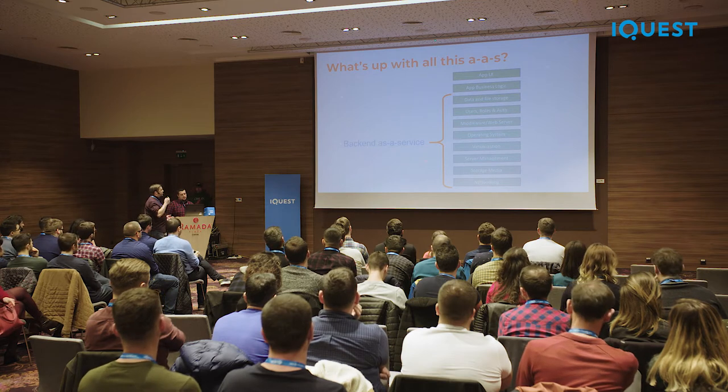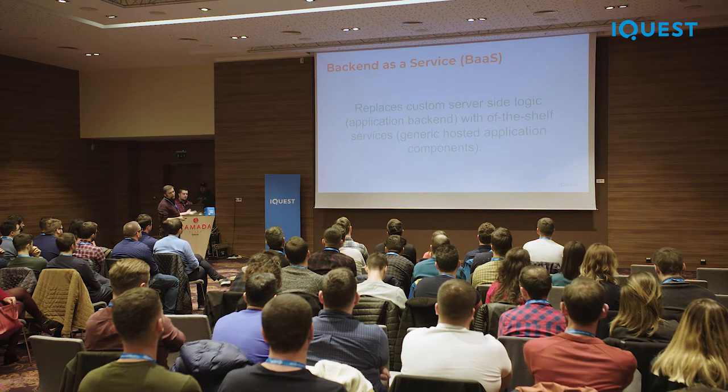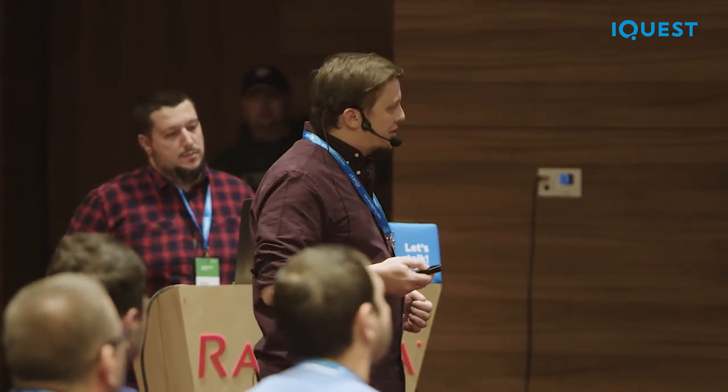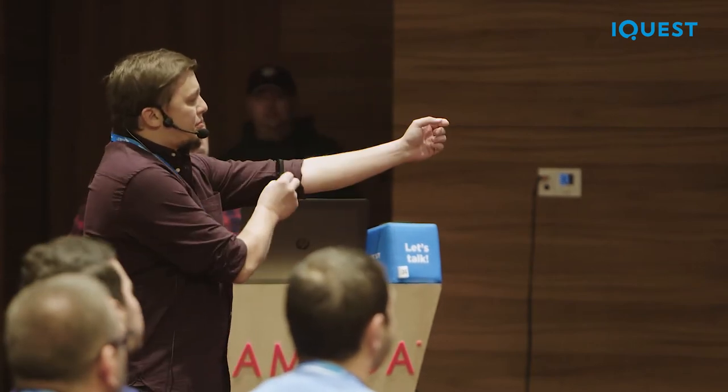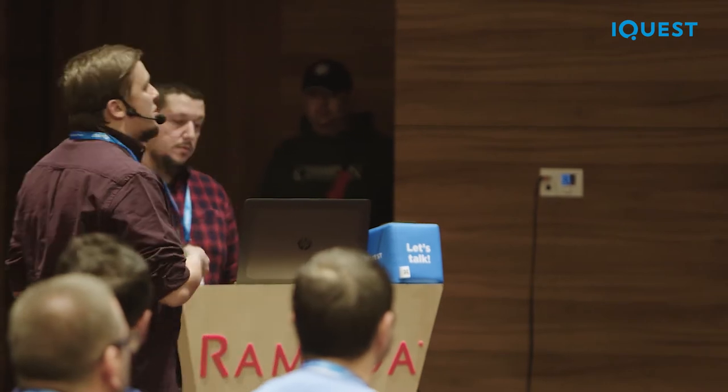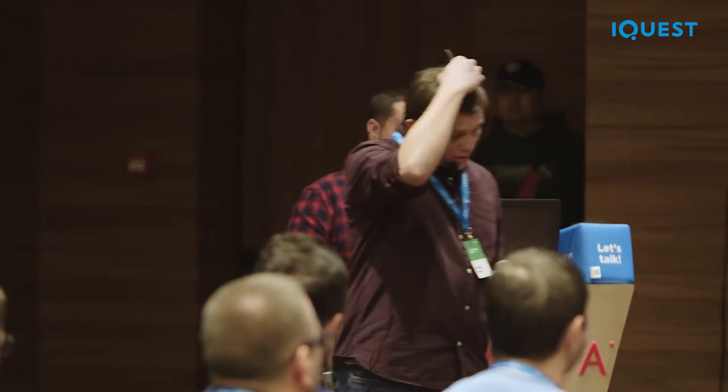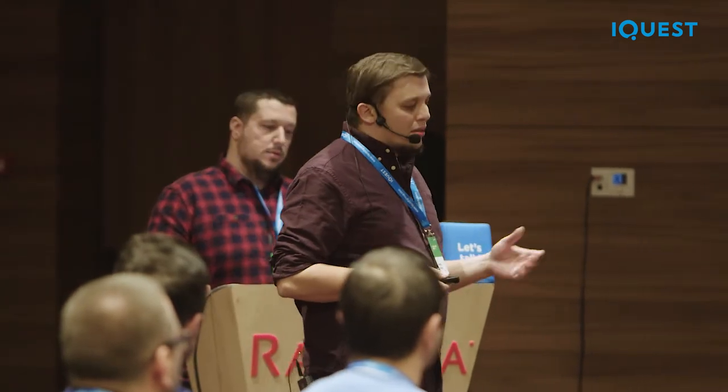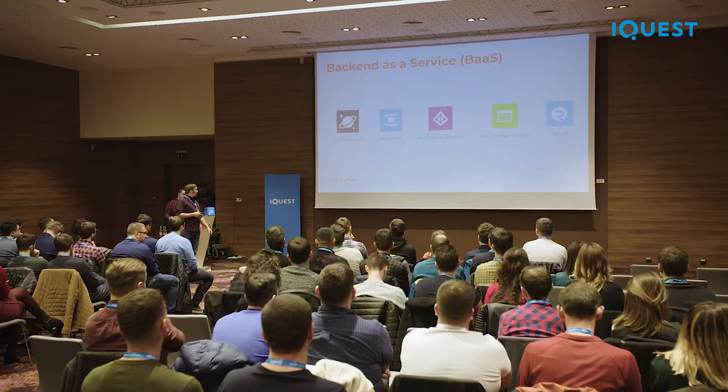Backend as a Service, which is a part of serverless, replaces all the custom server-side logic we used to implement and provides it as off-the-shelf components. For example, you can have web sockets — SignalR, which is available in Azure — a database like Cosmos DB, a messaging queue, or something for authentication like Active Directory. These are all already provided to you; you just have to use and configure them.